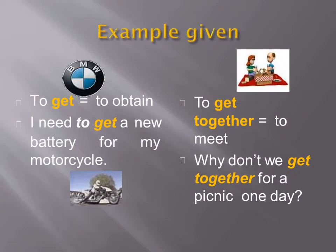To get means to obtain. Example: I need to get a new battery for my motorcycle. To get together means to meet. Example: Why don't we get together for a picnic one day?